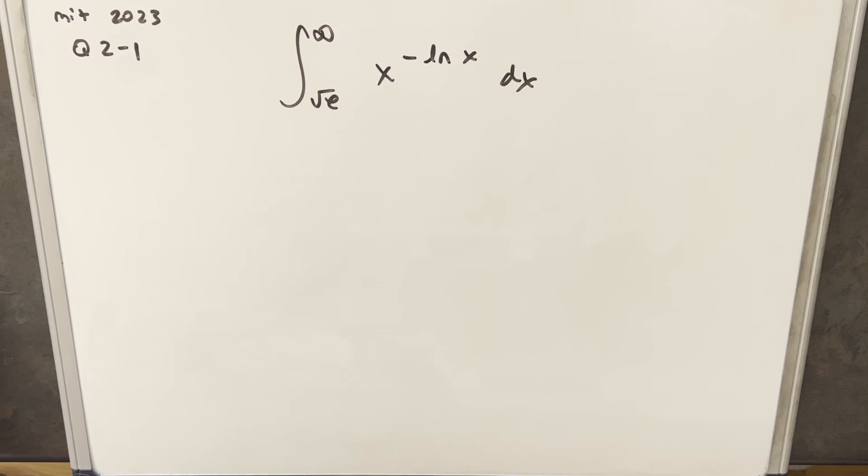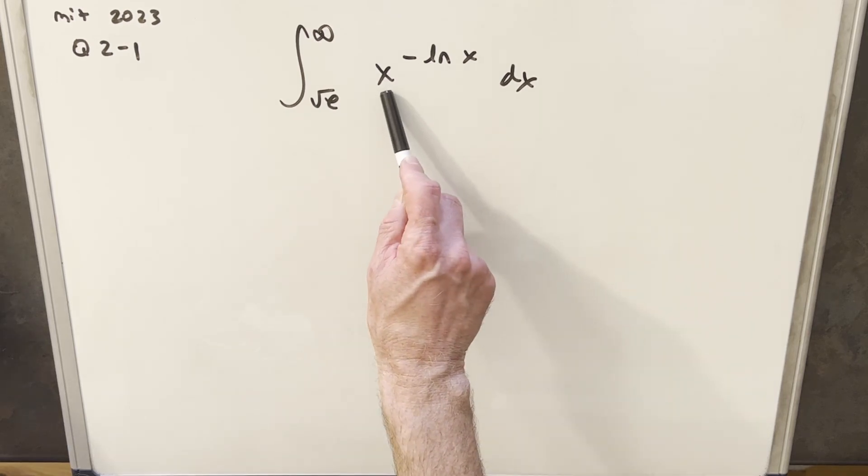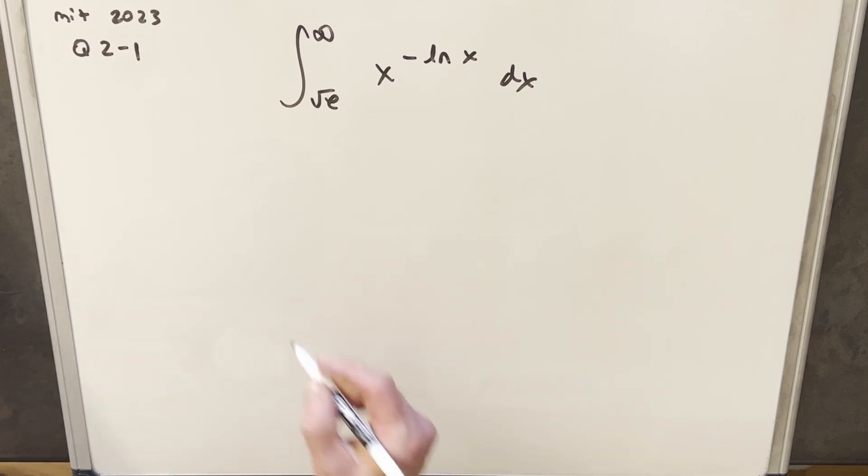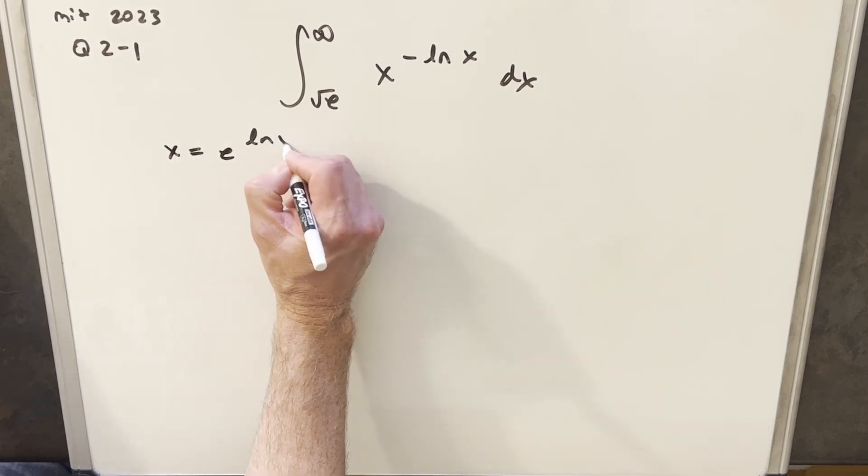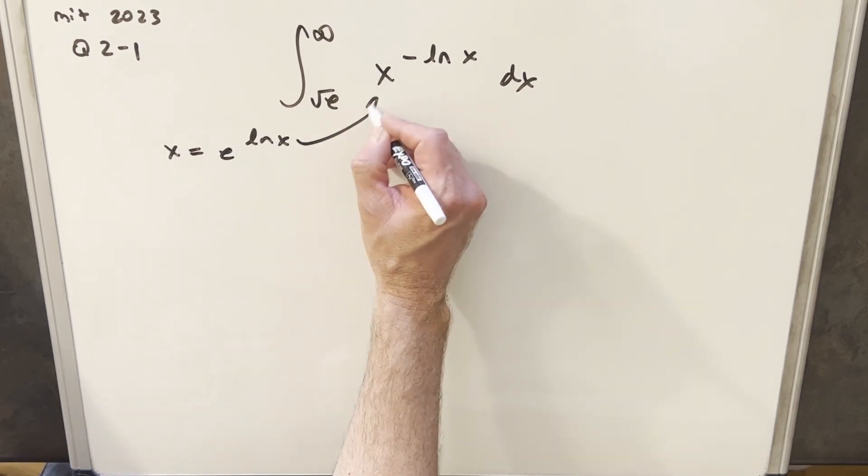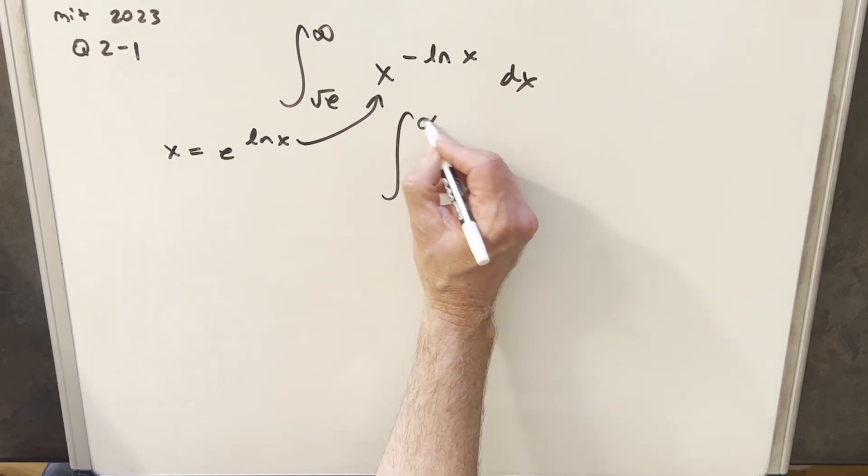Okay, so a really standard thing that we'll do when we have x in the base, and in a case where we obviously can't use the power rule here, we can just rewrite this x. We can write x as e to the ln x. And then from here, I'm just going to plug this back in, so rewriting this thing.